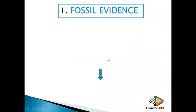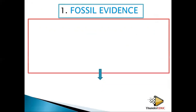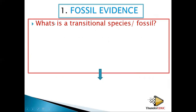Let's look at the fossil evidence. This is the one whereby students think is the toughest part of human evolution, but it's not tough. You just need to understand the concepts and then you will be able to pass exams about it. Under fossil evidence, you need to understand what is a transitional fossil or what is a transitional species.